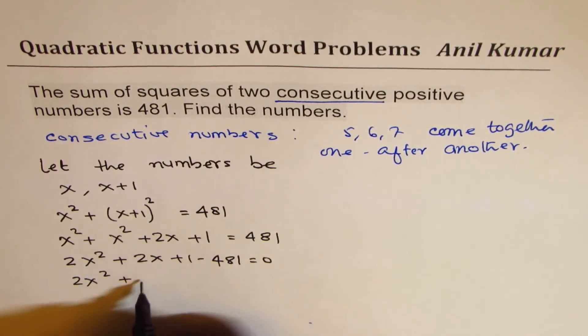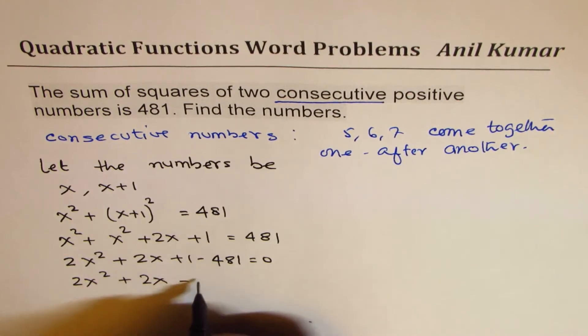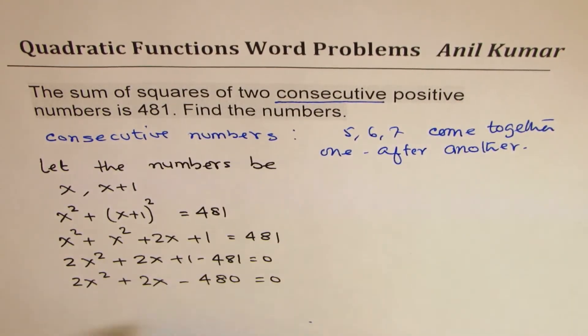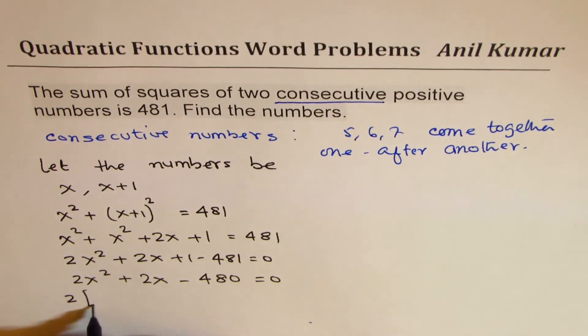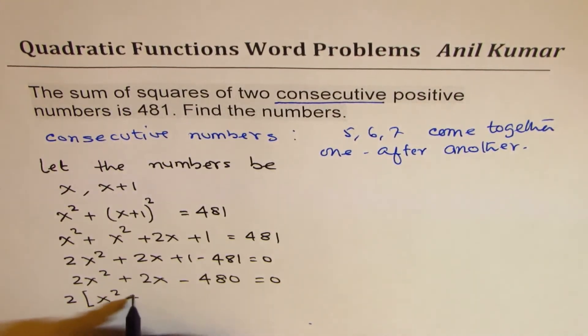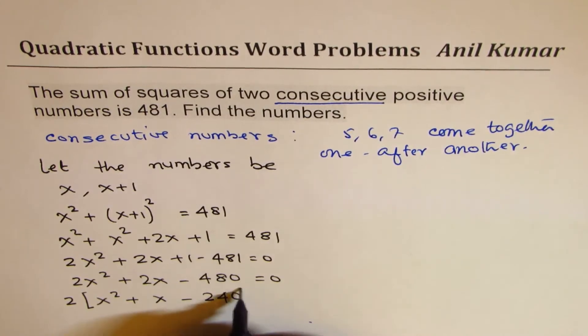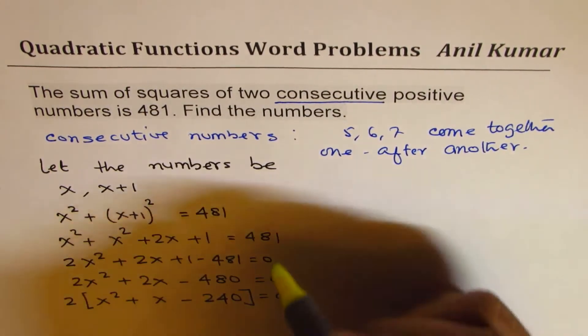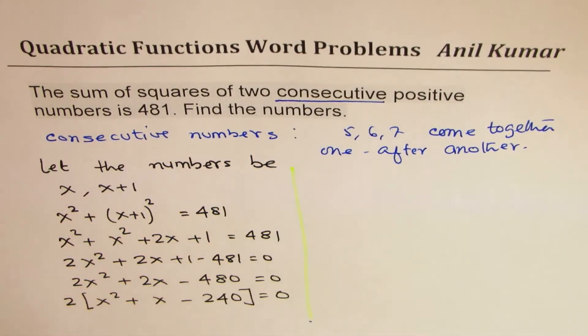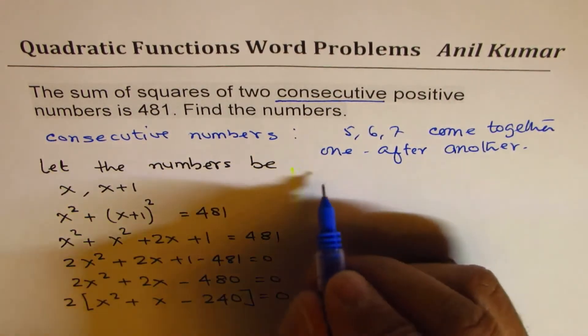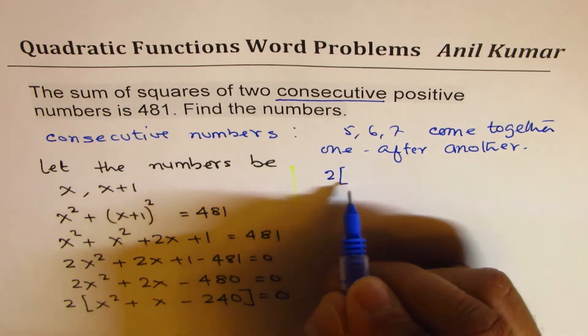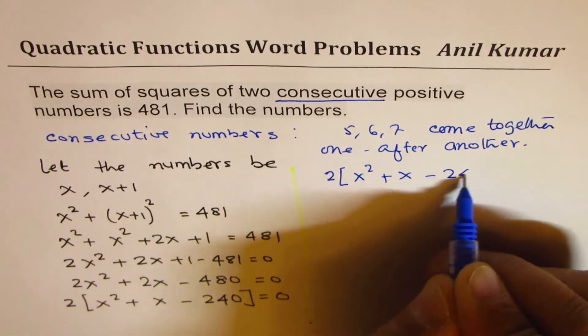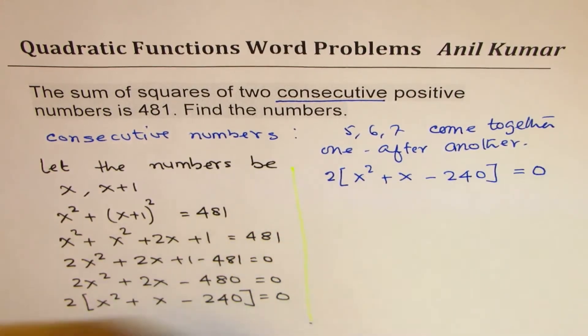So we get 2x squared plus 2x minus 480 equals 0. You can divide all by 2, you can factor out 2. I mean, x squared plus x minus 240 equals 0. So now we have done this. Let's factor. Let me rewrite this: 2 times (x squared plus x minus 240) equals 0.